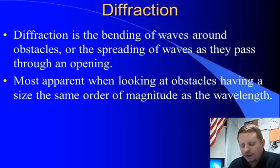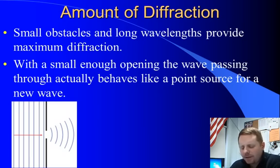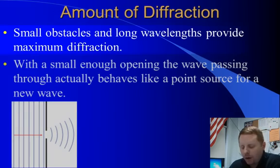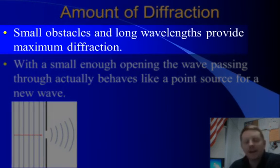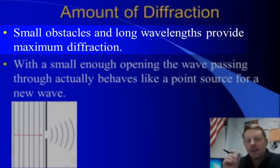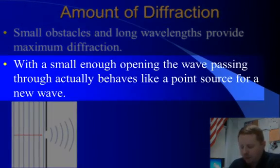So, diffraction, the bending of waves around obstacles. Now, the amount of diffraction can vary. Small obstacles and long wavelengths provide maximum diffraction, so you get the most bending with small openings and bigger wavelengths. If you have a small enough opening, the wave passing through actually behaves like a point source for a new wave.